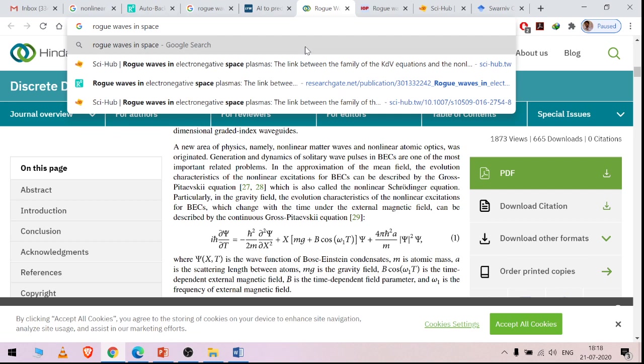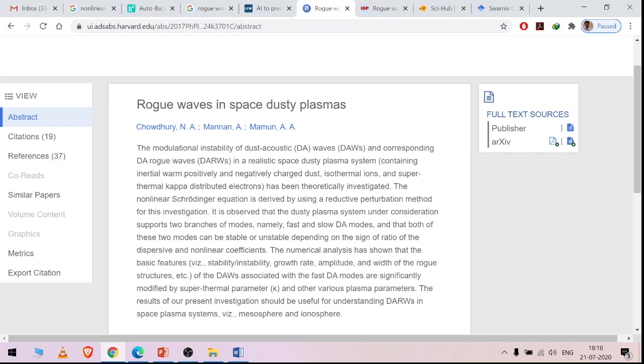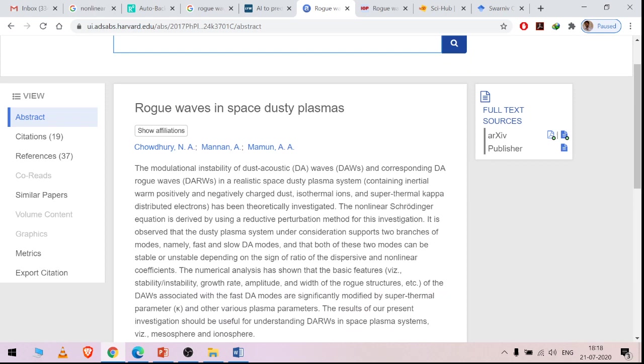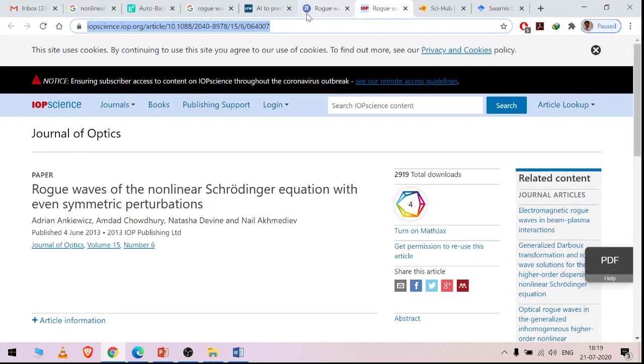In a dusty plasma as I have just said. So rogue waves in a space dusty plasma. I will also send this paper. So Abdul Mannan had done it—he is one of my close friends from Bangladesh. And this is a very good work, you can see, it was published in Physics of Plasmas.